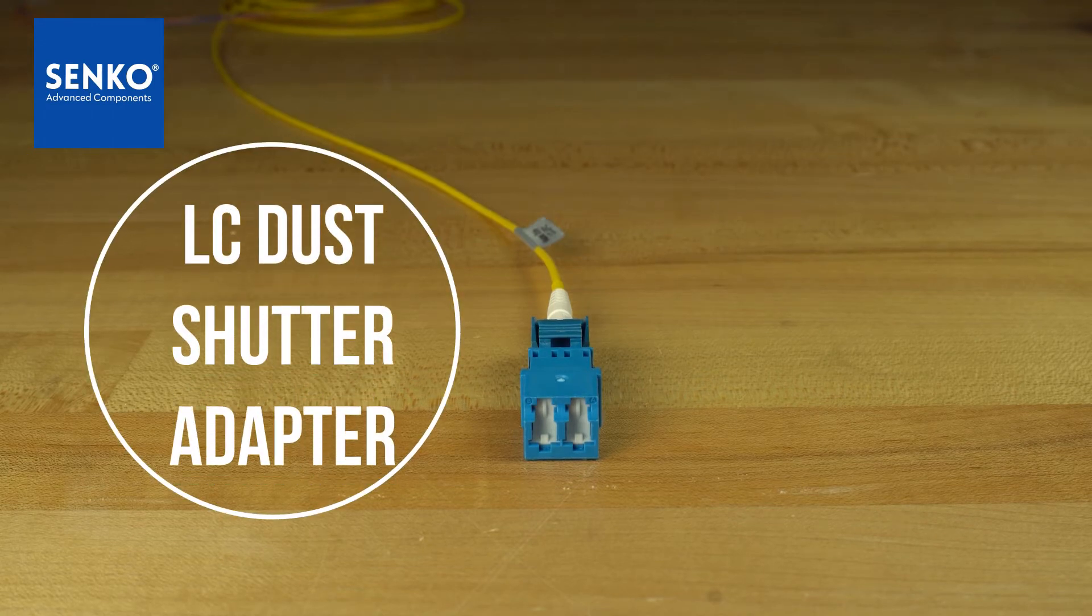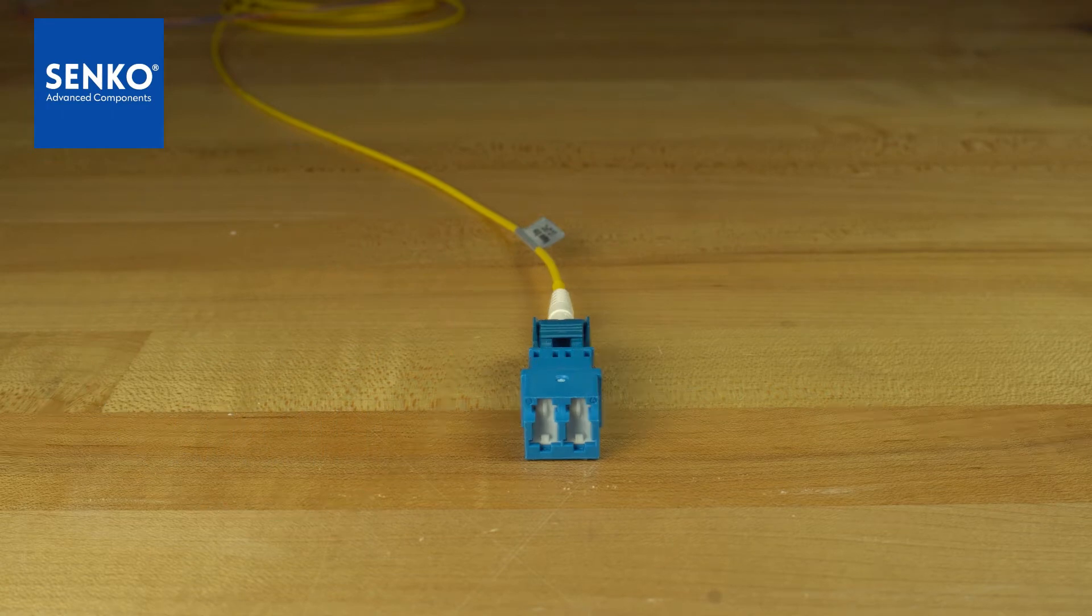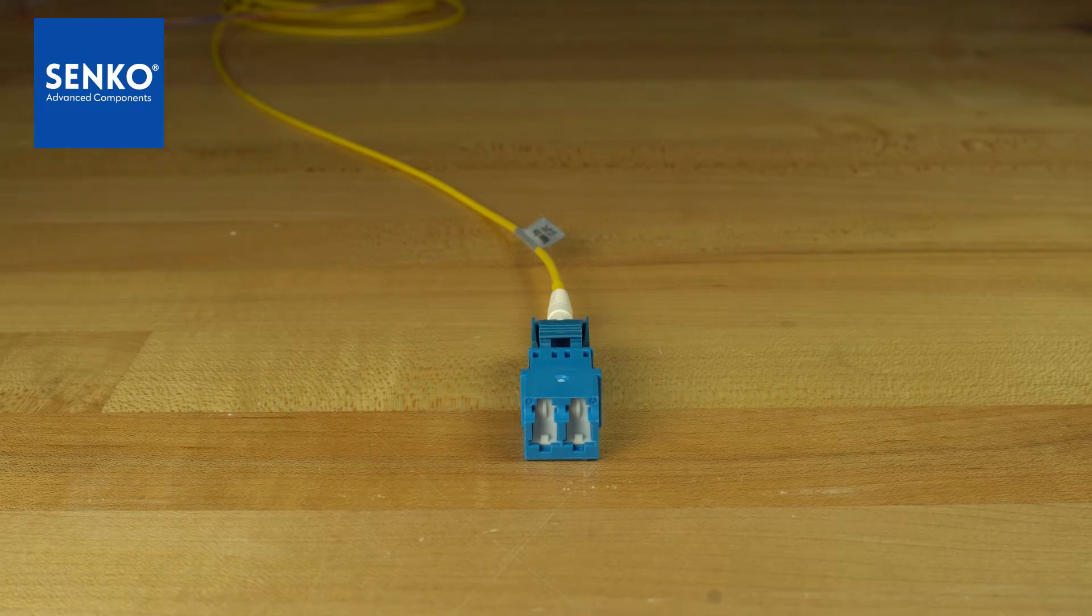The LC dust shuttered adapter is Senko's solution to one of the most common issues faced in typical fiber optic networks: contamination.